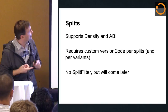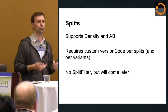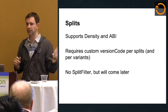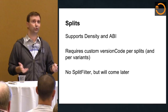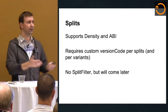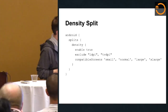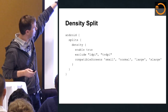With splits it's just a different packaging for the variant. We support density and ABI splits. For multi-APK, every APK has to have a different version code, and we provide a variant API to handle that. We don't yet have the ability to filter out a split — for example, Froyo didn't support Intel, so you should be able to say for your Froyo version you don't want an Intel split. We will add that soon.